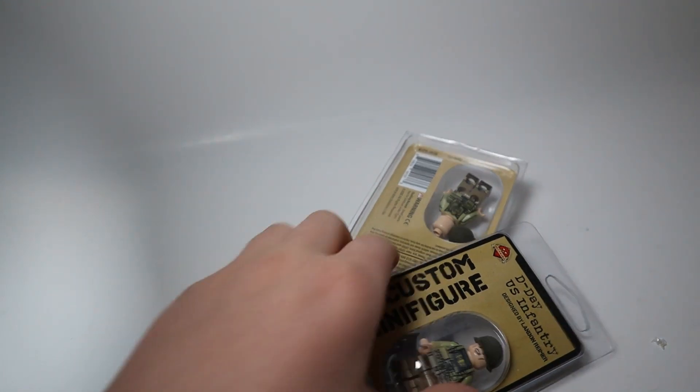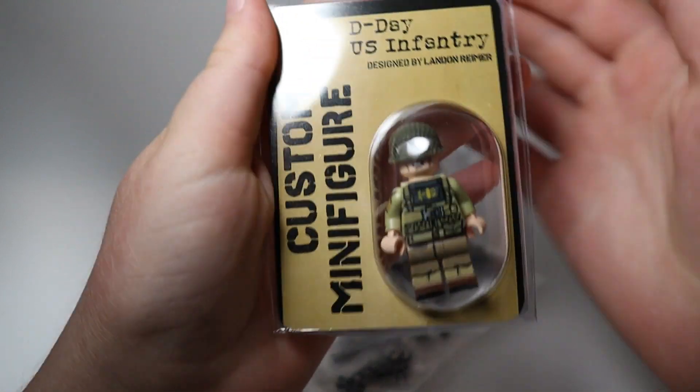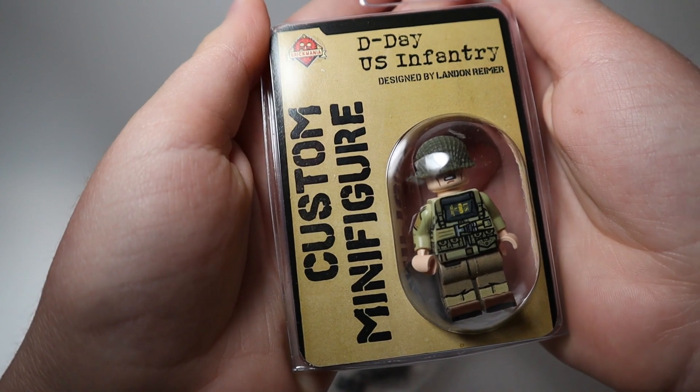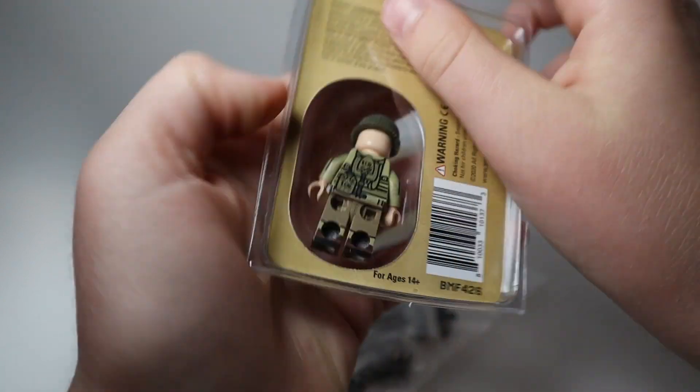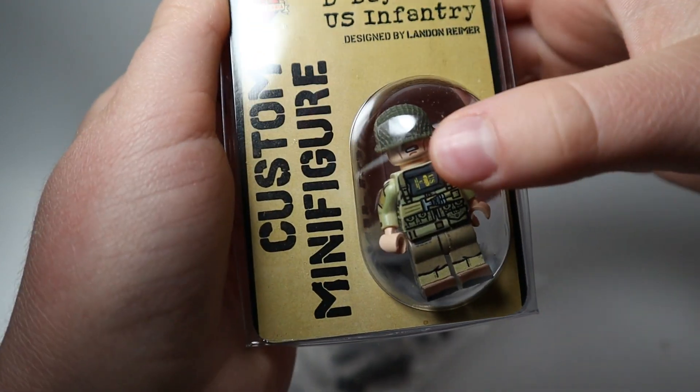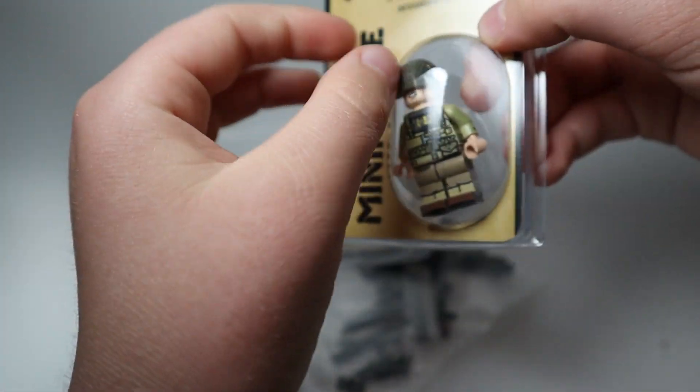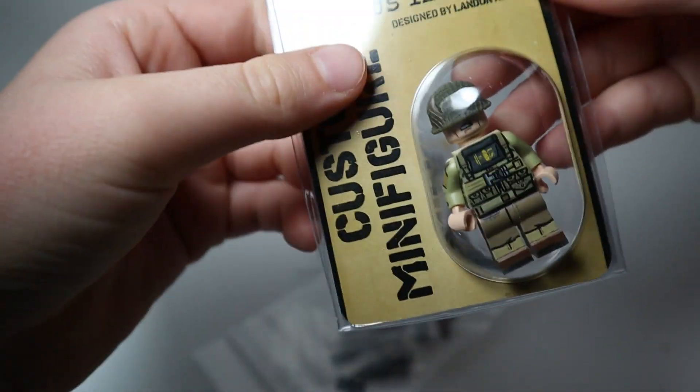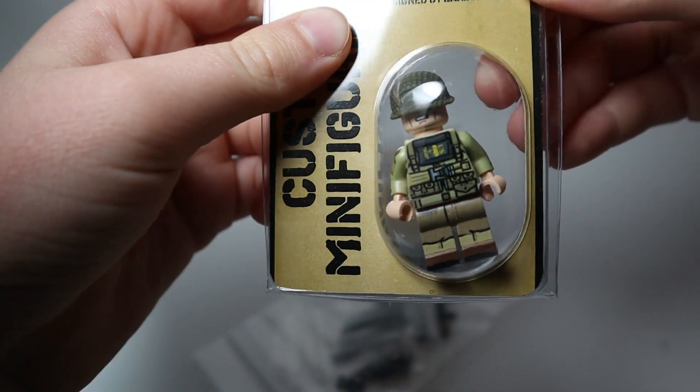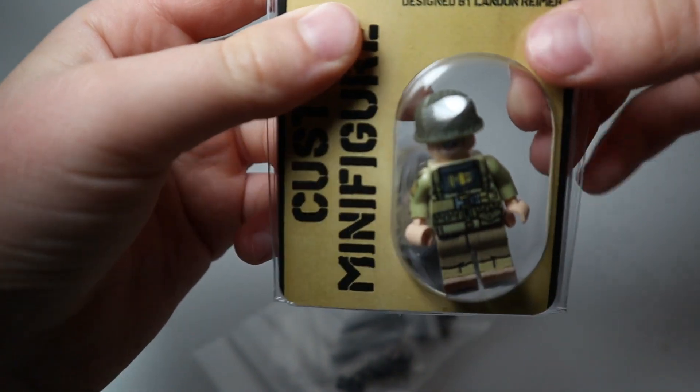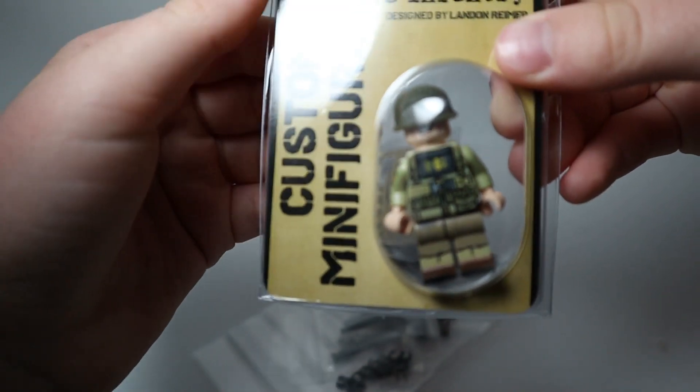I guess we'll get started with the minifigures that you guys see. This is actually the Brickmania US D-Day Infantry, which is really cool. They got their D-Day assault vests, gas mask, bag, belt strapping around, a ton of gear on. They got their little trench shovel, gaiters, really nice, loaded with gear. They also come with the custom printed helmet. I think it's on backwards, that's why you can't see his face.